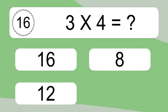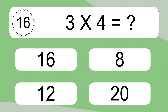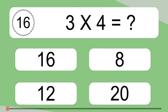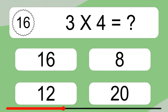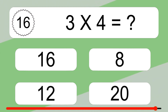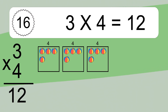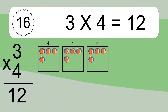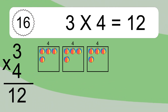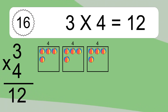3 times 4 equals what? 3 times 4 equals 12. We have 3 boxes, and each box has 4 colorful balls inside. If you count all the balls in all the boxes together, you will have 3 times 4 balls. This equals 12 balls.